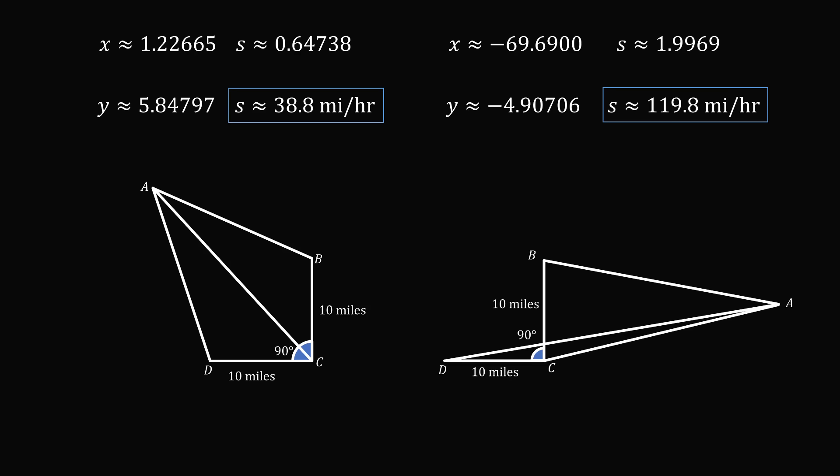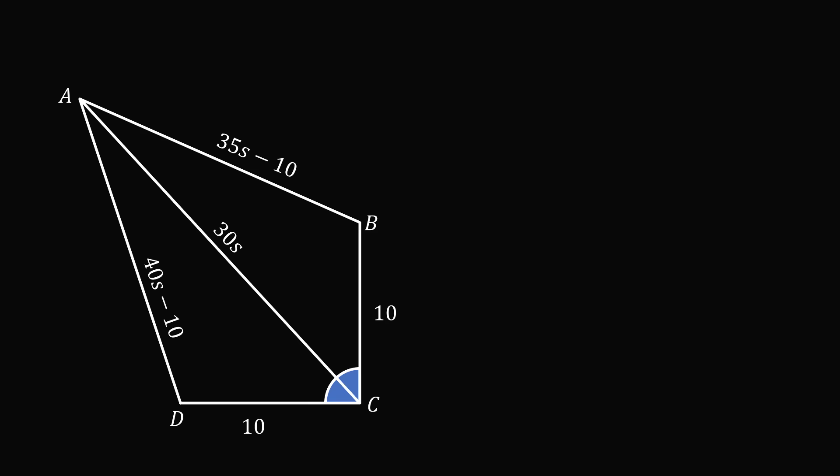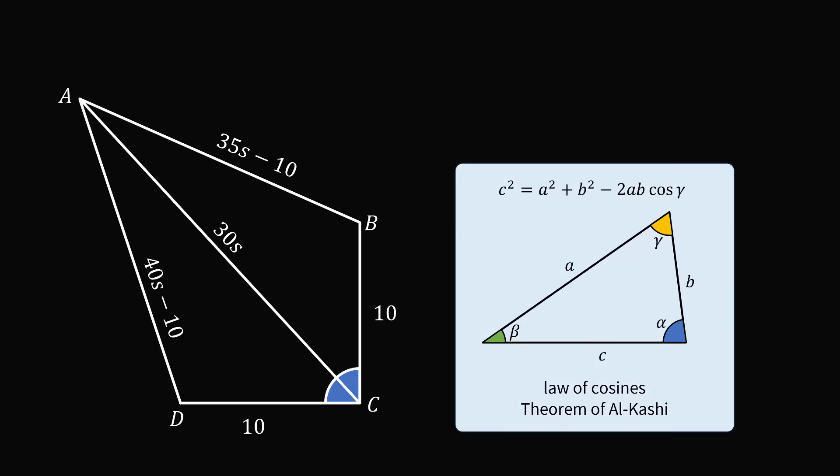Now that we've gone through the long way, let me show you a slightly faster approach. Method 2 will involve trigonometry — in particular, we will use the law of cosines, also known as the theorem of Al-Kashi, which is a generalization of the right triangle theorem.